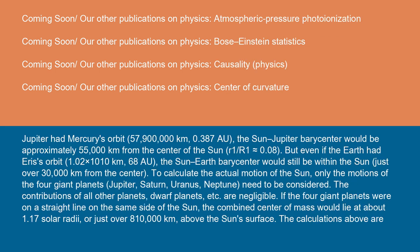If Jupiter had Mercury's orbit (57,900,000 km, 0.387 AU), the Sun-Jupiter barycenter would be approximately 55,000 km from the center of the Sun (R1/R ≈ 0.08). But even if the Earth had Eris's orbit (1.02 × 10^10 km, 68 AU), the Sun-Earth barycenter would still be within the Sun, just over 30,000 kilometers from the center.